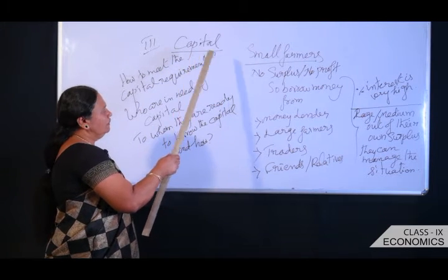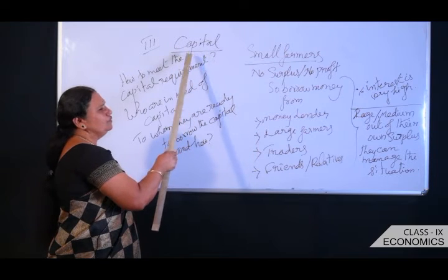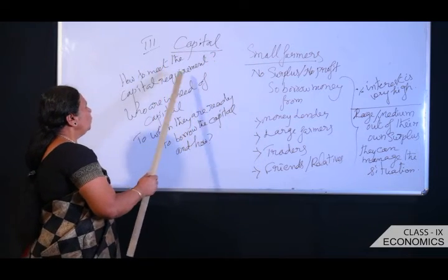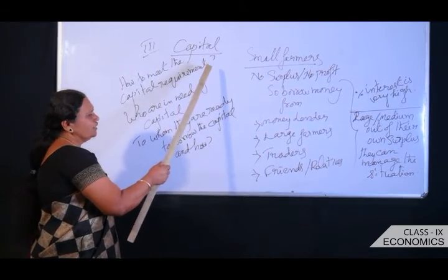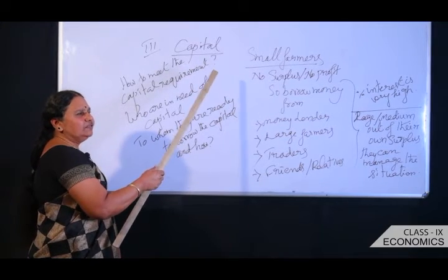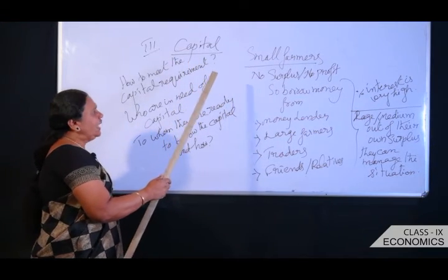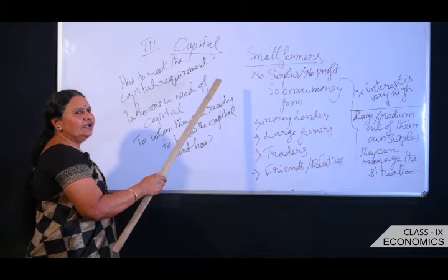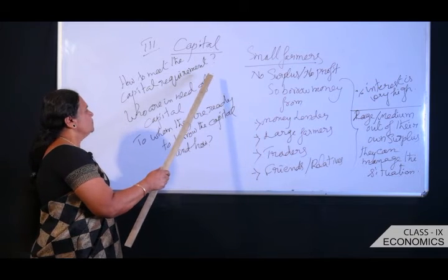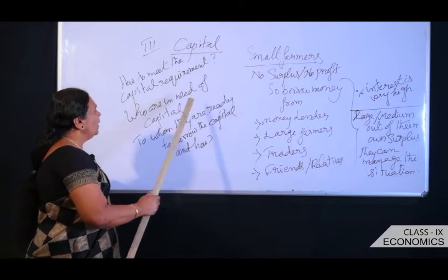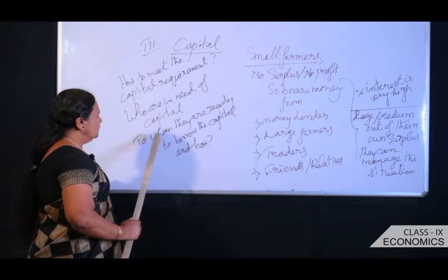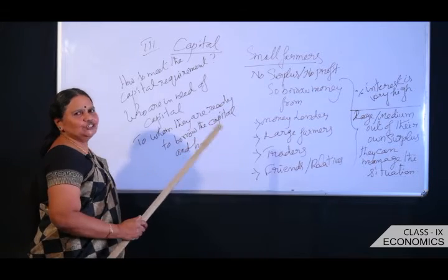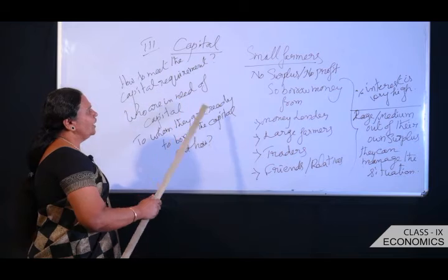Already we discussed land and labor. Now we enter into capital. Capital is required either in the form of fixed capital or working capital. All farmers need capital to continue their farming activities. The important questions are: who among the farmers is in need of capital, to whom do they borrow, and what is their condition?